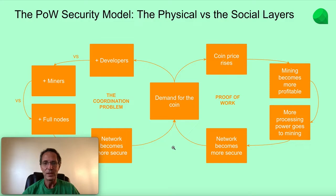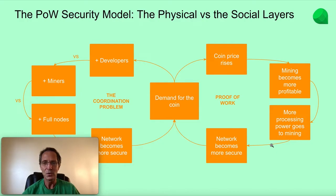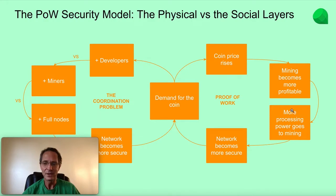It all starts with demand for the coin. When there's more demand for the coin, the coin price rises. When the coin price rises, more mining becomes more profitable, and therefore more processing power by miners is dedicated to the network. The more processing power is dedicated to the network, the more electricity and capital is invested in creating the Proof-of-Work, and then the network becomes more secure. Because it becomes more secure, it is more attractive for investors and users of that cryptocurrency, so there's more demand for the coin — this is how the virtuous circle continues, as more security leads to a higher price, which creates more security as well.